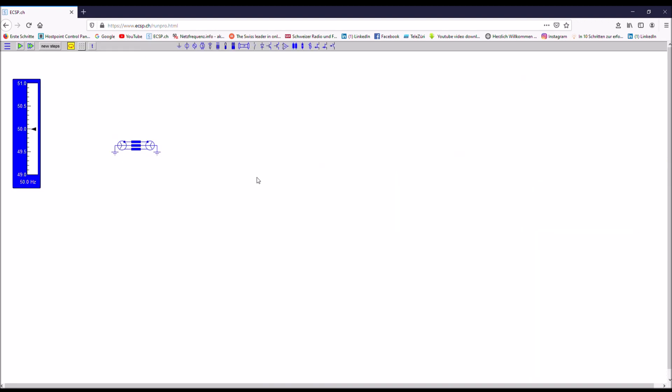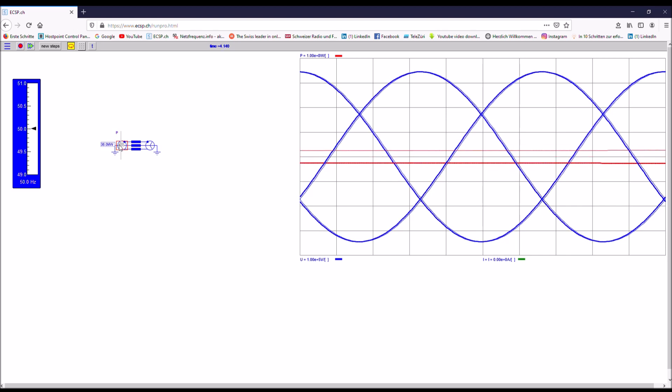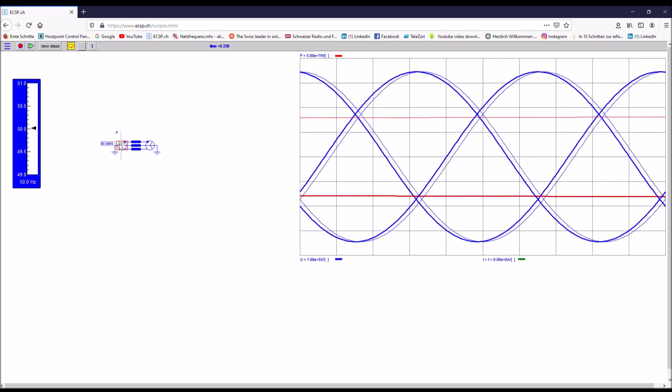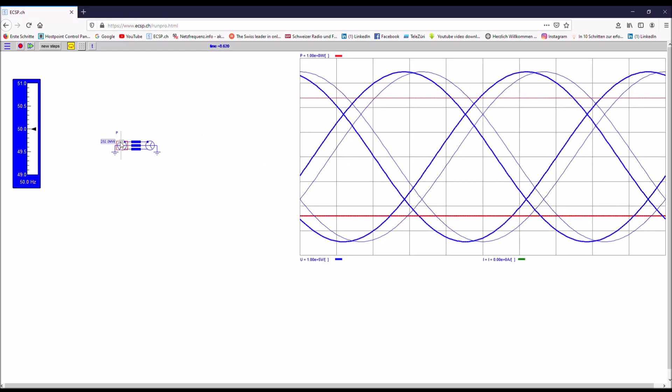So what you see now if you run the model is that if you shift up the shifter here, you increase the power, the mechanical power input into the generator, meaning it's the torque. By the way, the power is the red line. You see power output, power input, and what you can observe is two things.